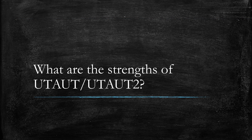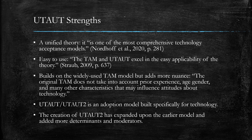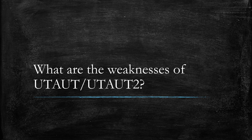Now let's talk about some of the strengths and weaknesses of UTAUT and UTAUT2. One of UTAUT's greatest strengths is its unified nature — it is one of the most comprehensive technology acceptance models, building on earlier frameworks like TAM and adding more nuance and variables. UTAUT2 similarly expands on the original, and both models are specifically designed for technological change.